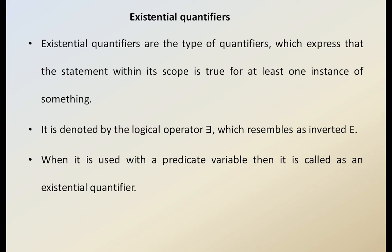The existential quantifier expresses that the statement within its scope is true for at least some instances, not for all. For example, if you want to say a quality is applicable for only some things, you use the existential quantifier. It is different from the universal quantifier — when only some part is applicable, you use the existential quantifier. It is represented by the 'there exists' symbol, which resembles an inverted E.